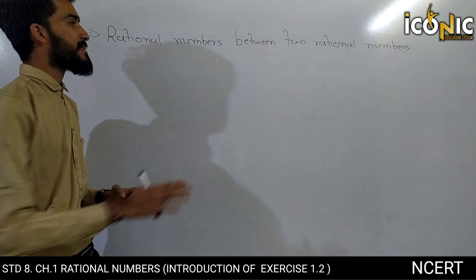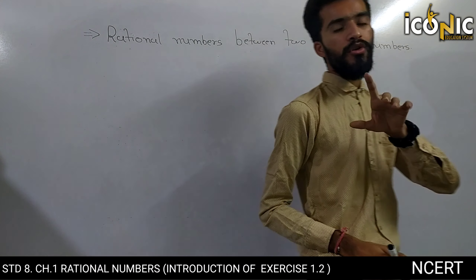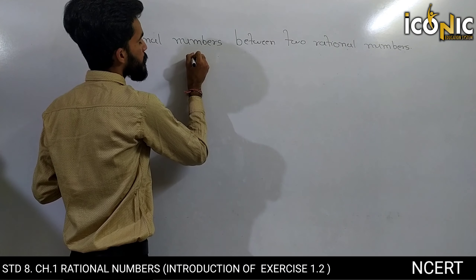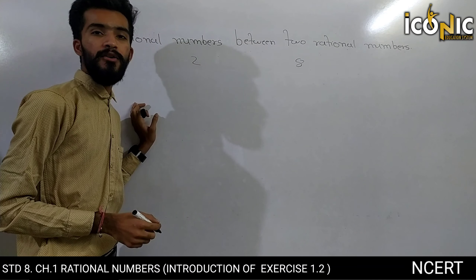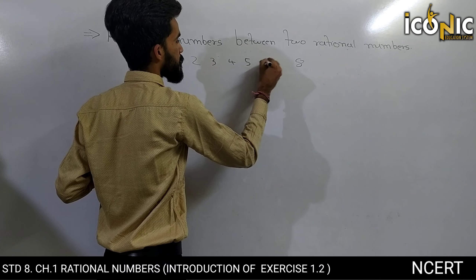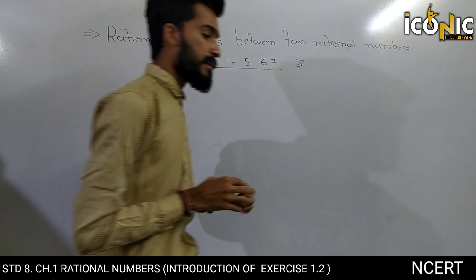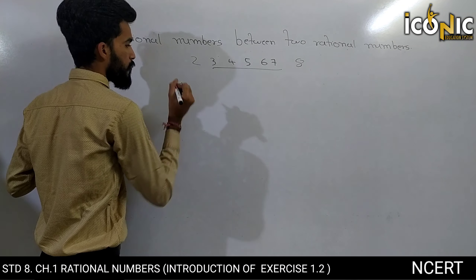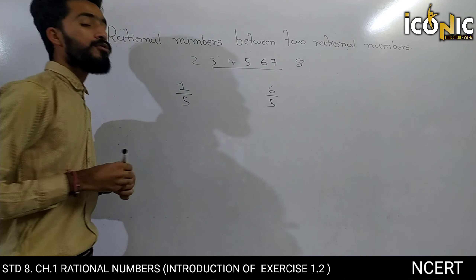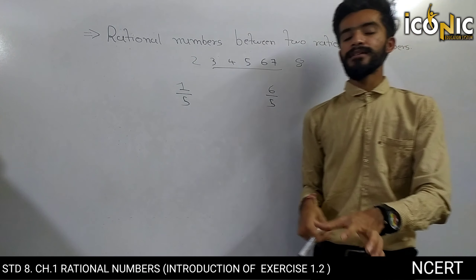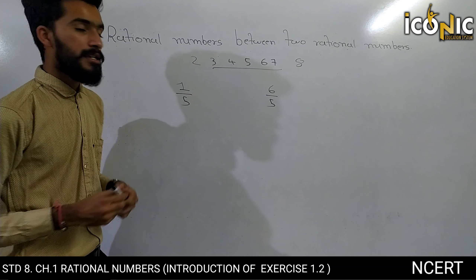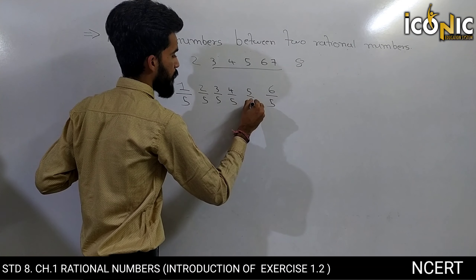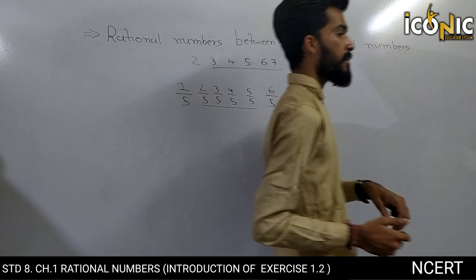Hello students, this is our next topic: rational numbers between two rational numbers. Yaani ki, kisi bhi 2 rational numbers ke beech mein kitne rational numbers aayenge. Pehle hum ise clarify karne ke liye whole numbers ke liye karte hain. Suppose main aapko aisa boli ki 2 and 8 - uske beech mein kitne whole numbers aate hain? Toh aap bologe ki 3, 4, 5, 6, 7 - yeh saare numbers uske beech mein aate hain. Ab baat rational number ke beech mein kitne rational numbers aate hain. Suppose 1 upon 5 and 6 upon 5 - iske beech mein aata hai 2 upon 5, 3 upon 5, 4 upon 5, 5 upon 5 - yaani ki yeh chaar rational numbers uske beech mein aate hain.